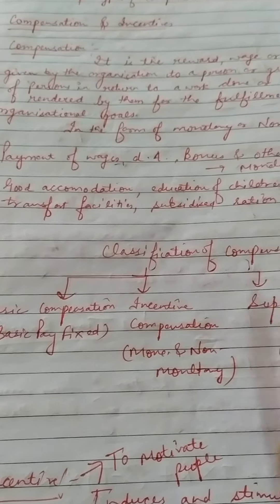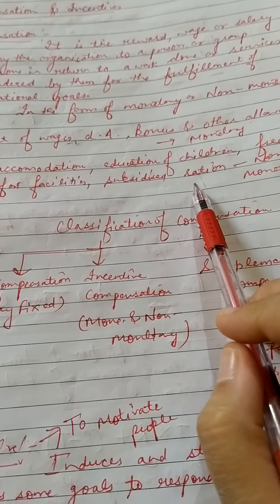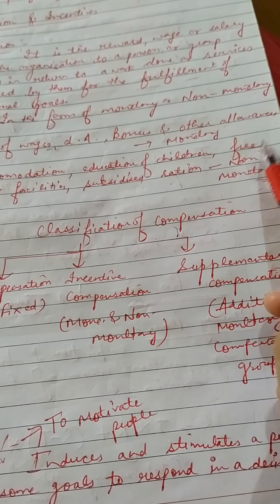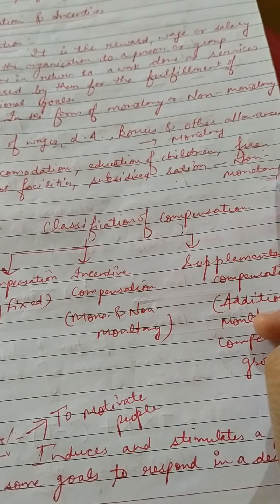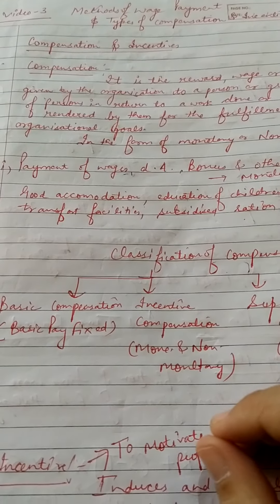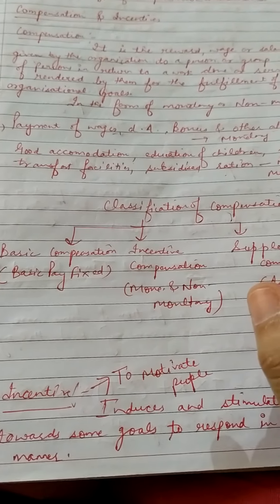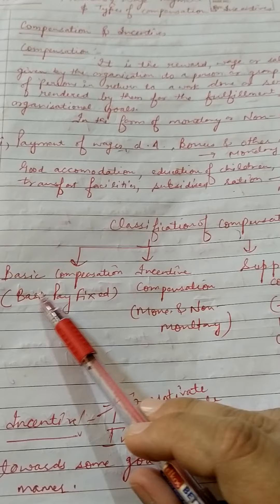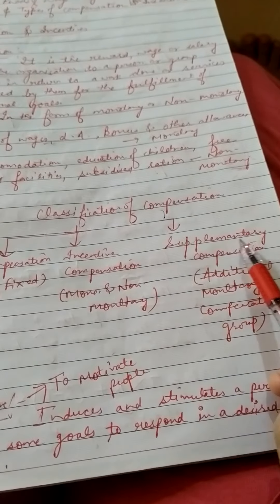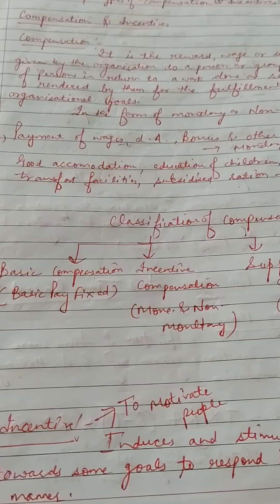Non-monetary compensation examples include good accommodation facility, housing facility, education of children free of cost, free transport facilities, and subsidized ration. These non-monetary compensation forms can be provided to employees by the organization.